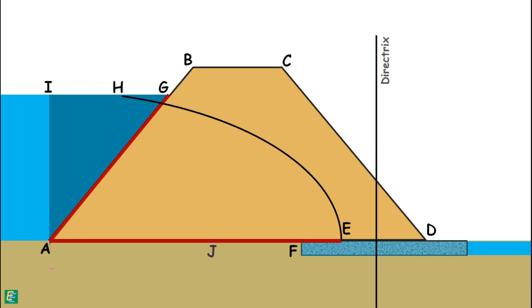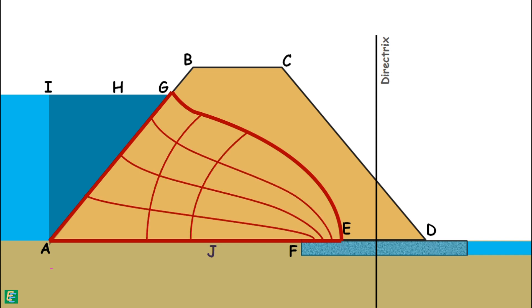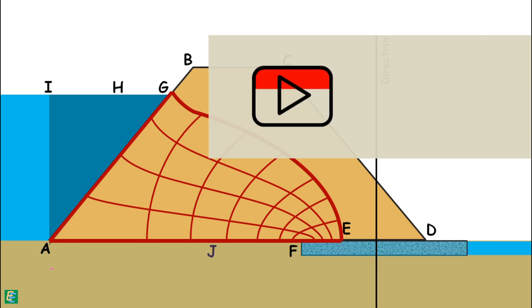Once the parabola is drawn, corrections must be made for flow net conditions. A perpendicular line is drawn to the upstream face AB at point G — where the top flow line originates — and blended manually into the parabola curve. With the top flow line established as the last unknown boundary condition, we can now draw the complete flow net for the seepage flow using the method discussed previously, and the seepage quantity can be calculated using the standard formula.